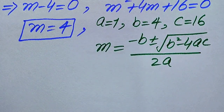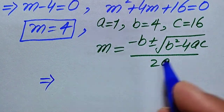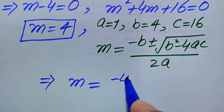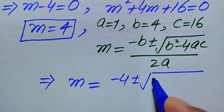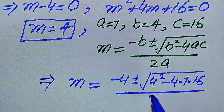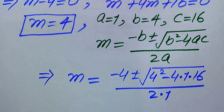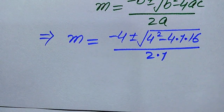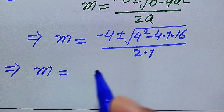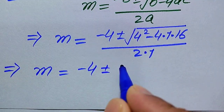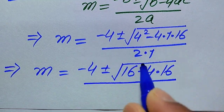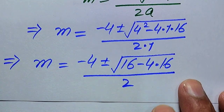We substitute the values of a, b and c into the formula. This gives: m equals negative 4 plus or minus square root of (4 squared minus 4 times 1 times 16), divided by 2 times 1. Simplifying: m equals negative 4 plus or minus square root of (16 minus 64), divided by 2.